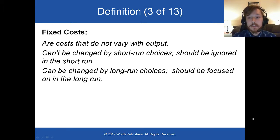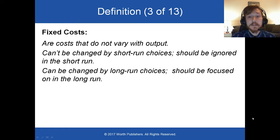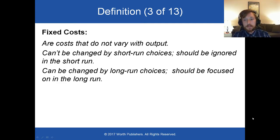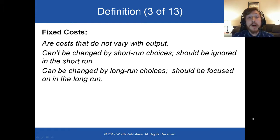If I rent 30 acres of land to grow corn, I have to pay $300 per acre — no matter whether I grow 2,000 bushels of corn, 0 bushels of corn, or if I grow wheat. A fixed cost is a cost that does not vary with output. Short-run choices, such as how much to produce, don't affect fixed costs. However, in the long run, long-run choices can affect fixed costs.